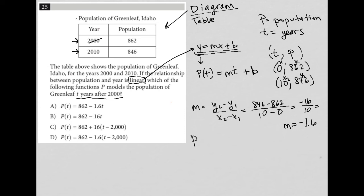So I can go back and say, that means P of t is equal to negative 1.6 times t plus b. Well, what is b? B is the y-intercept. So the y-intercept is always going to be the y value when x is zero. And we know that from here. So when x is zero, our y value is 862. So that means that b is equal to 862.